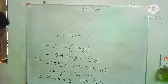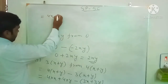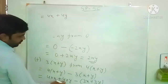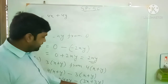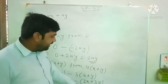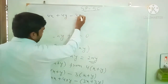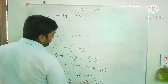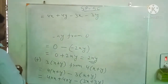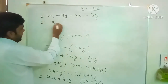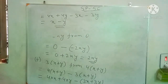4 into x gives 4x, and 4 into y gives 4y. Now open the bracket with the minus sign — whenever you multiply the minus sign with each term in the bracket, it changes the sign of each term. So minus times plus 3x becomes minus 3x, and minus times plus 3y becomes minus 3y. Group the like terms: 4x minus 3x gives x, and 4y minus 3y gives y. So the answer is x plus y.